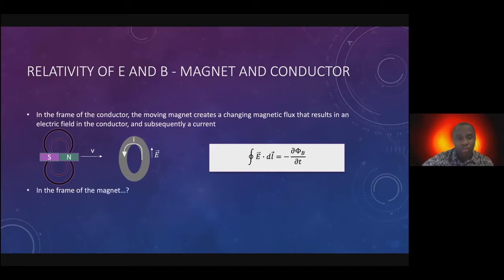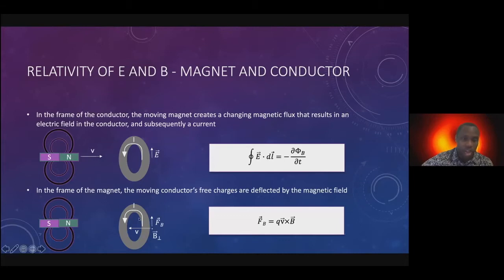Now imagine if you are doing the same thing, only you're in the frame of the magnet. So this magnet is stationary, but now you have a moving conductor moving in the opposite sense. In this case, as any self-respecting magnet will tell you, the forces are now due to the magnetic field on moving charges. The Lorentz force law now gives you a current. And if we notice what happened before, it's exactly the same current.